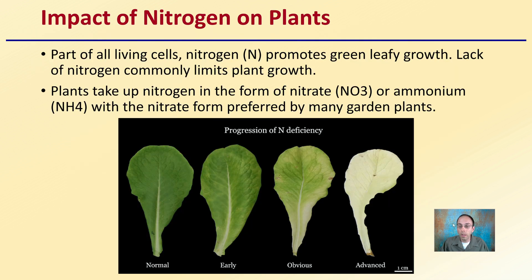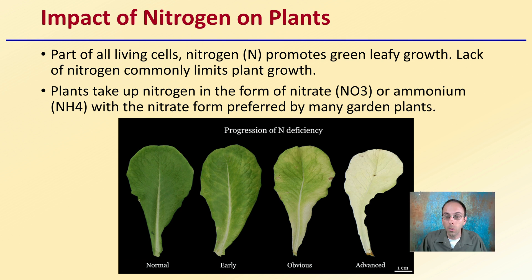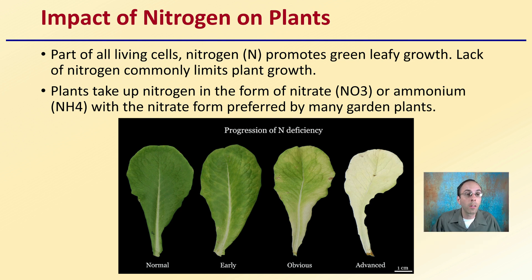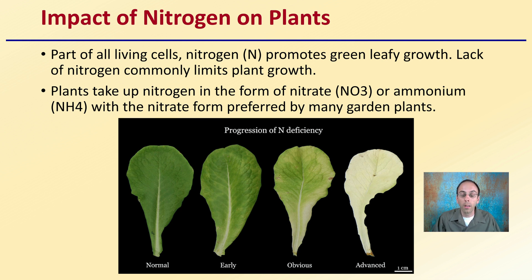The impact of nitrogen on plants: nitrogen is an important nutrient because it's part of all living cells. Nitrogen promotes green leaf growth, and lack of nitrogen commonly can limit plant growth. Plants uptake nitrogen in the form of nitrate (NO3) or ammonium (NH4), with the nitrate form being preferred by many garden plants. It's not only the nutrient itself, but also the molecular form that impacts how it may be taken up by a plant.